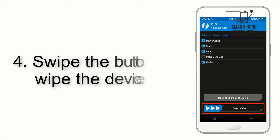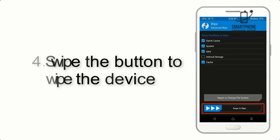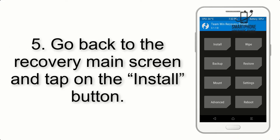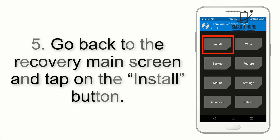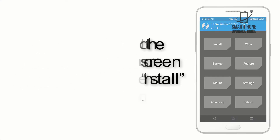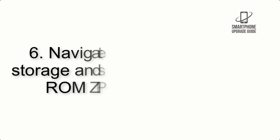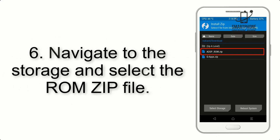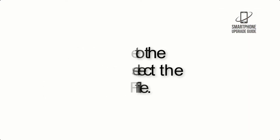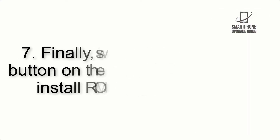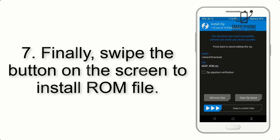Step 4: Swipe the button to wipe the device. Step 5: Go back to the recovery main screen and tap on the Install button. Step 6: Navigate to the storage and select the ROM zip file.